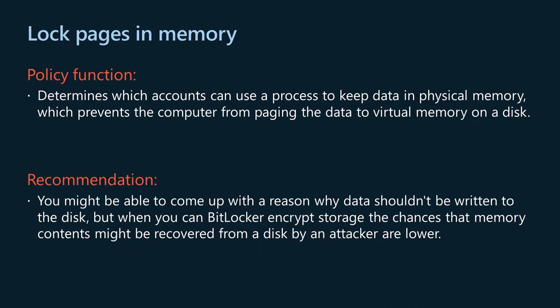The lock pages in memory policy setting determines which accounts can use a process to keep data in physical memory, which prevents the computer from paging the data to virtual memory on disk. Thereby, the amount of memory that Windows can reclaim under pressure is limited, which could lead to performance degradation. Normally, an application running on Windows can negotiate for more physical memory, and in response begins moving data from RAM — such as the data cache — to disk, freeing more RAM for the operating system. When you can BitLocker encrypt storage, the chances that memory contents might be recovered from disk by an attacker are lower.